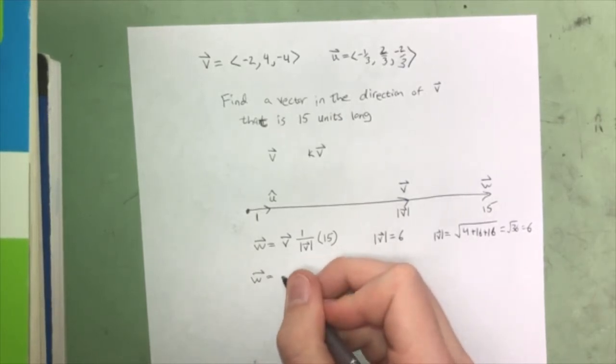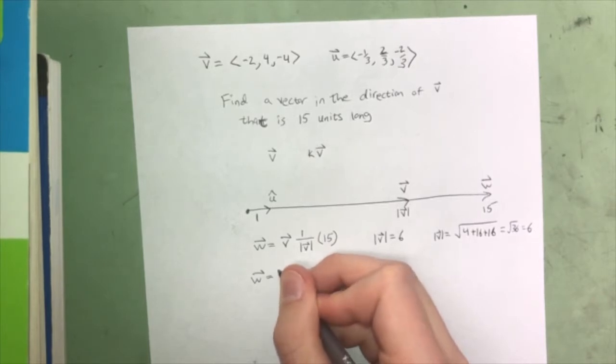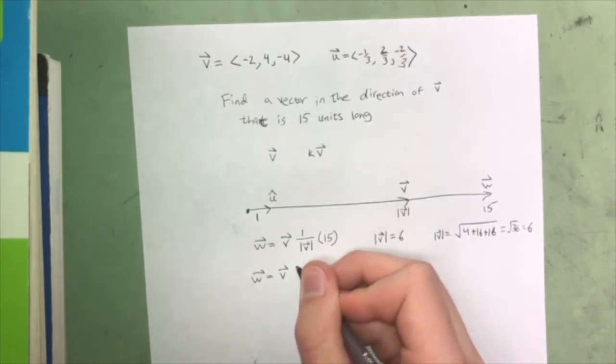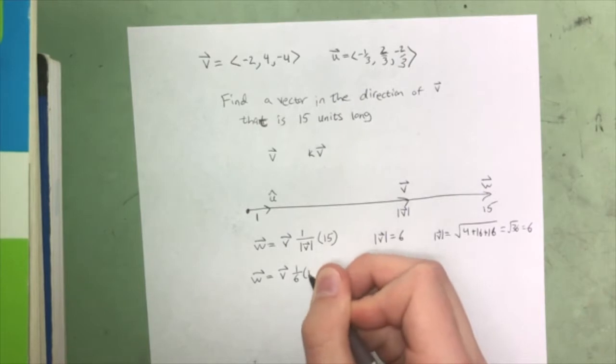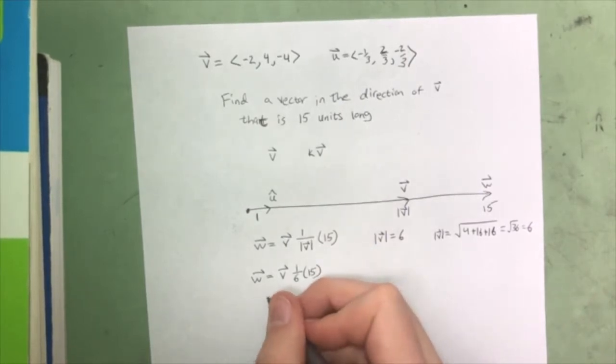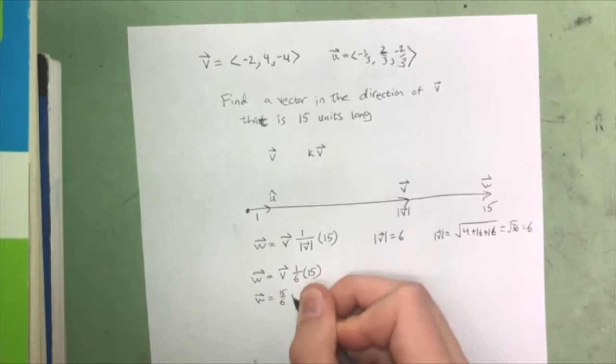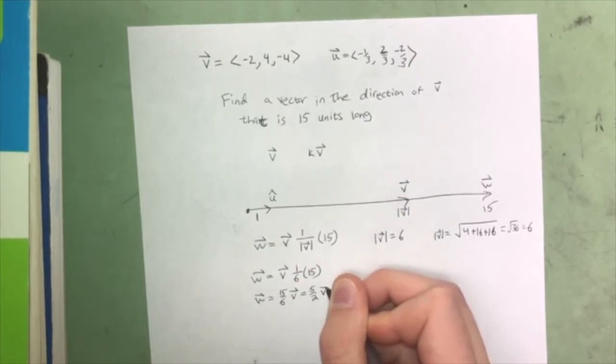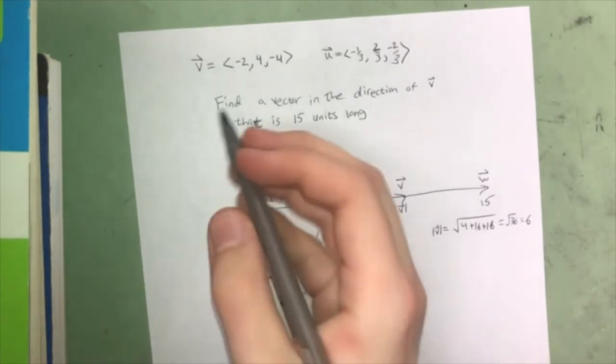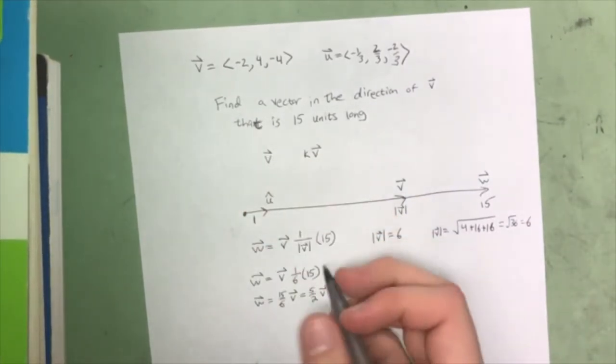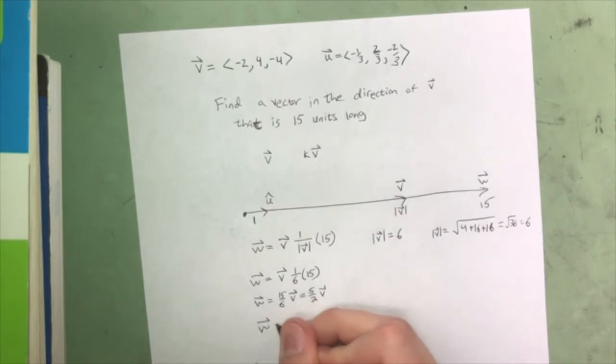equal to the vector v times 1 over 6 times 15. And so if we just simplify that, we get w is equal to 15 over 6 times v, which is 5 halves times v. And so then plugging or substituting v into the equation, we get that w is 5 halves the vector negative 2, 4, negative 4, which is negative 5, 10, negative 10.